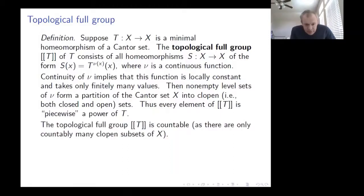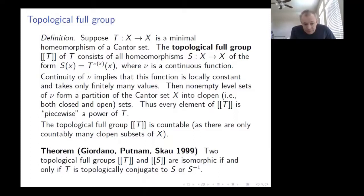We can think of the topological full group as consisting of homeomorphisms representable as piecewise powers of t. A nice feature is that this group is countable, because there are only countably many clopen sets. The group was introduced by Giordano, Putnam, and Skau in their 1999 paper, where they proved it is an almost complete invariant of the topological dynamics.